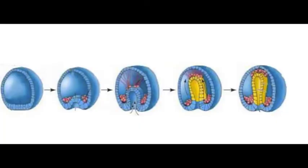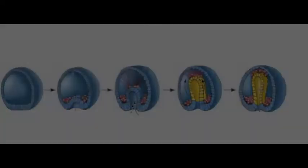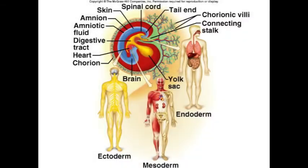During gastrulation, the three germ layers form. These layers are the endoderm, mesoderm, and ectoderm. The different layers move around and interact with one another using different chemical signals. Depending on where these layers move, the cells form different structures.